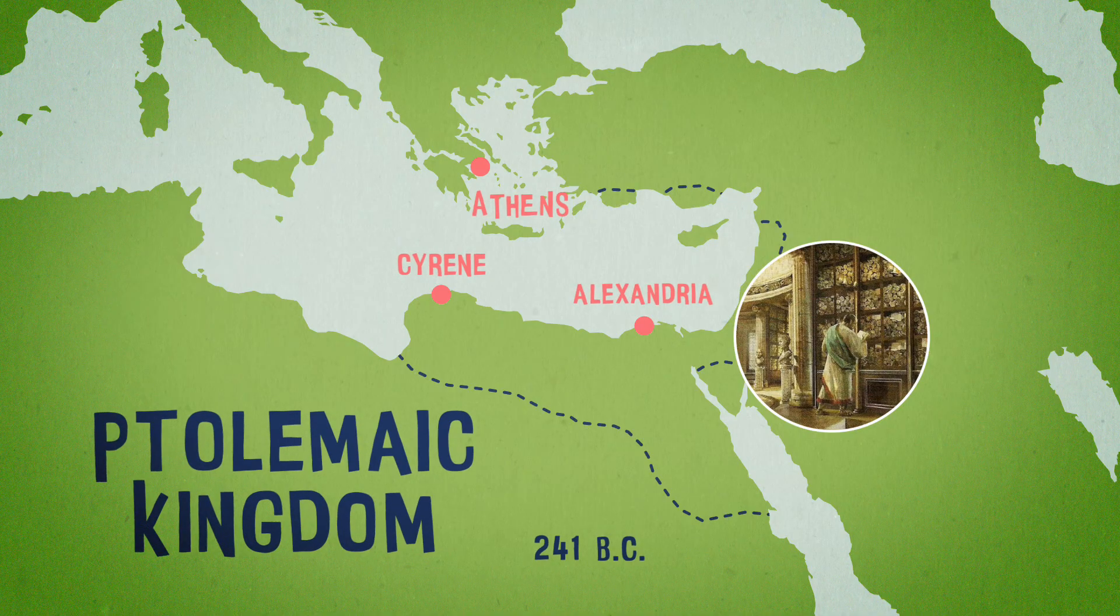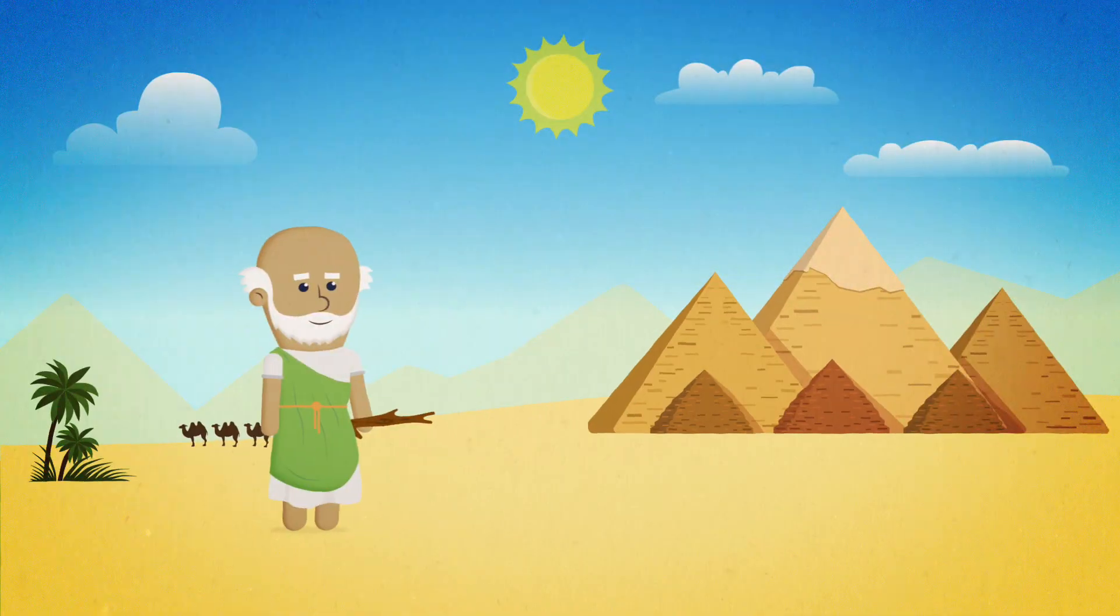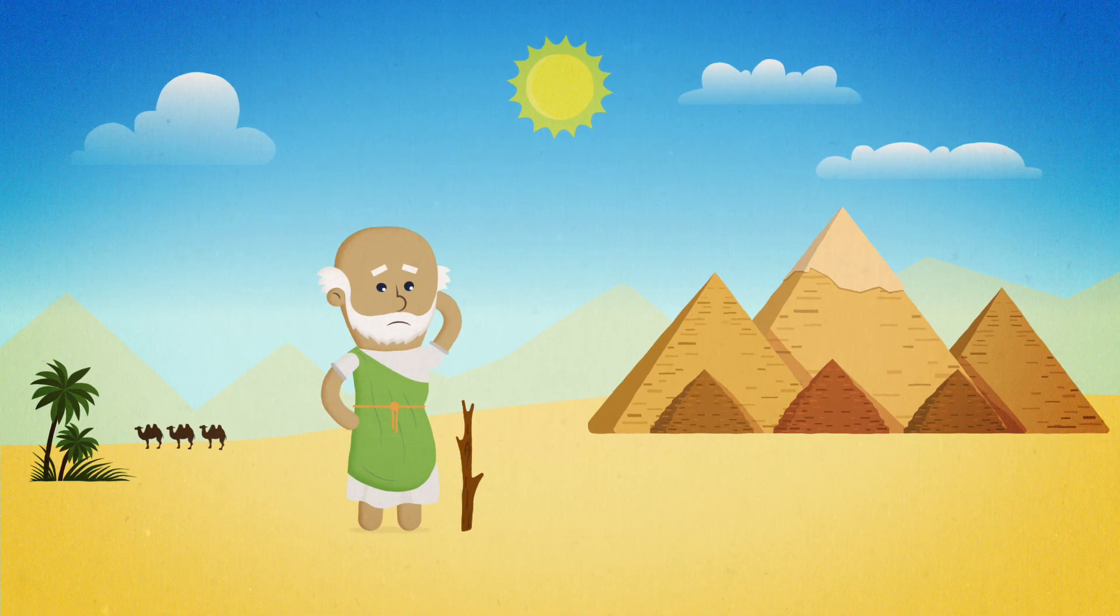His most famous experiment was completed here, but actually began 500 miles south in the city of Cyene. One mid-summer's day, Eratosthenes noticed that no vertical shadows were cast at noon, meaning that the sun was directly overhead Cyene.